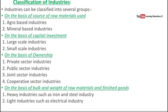The last classification is on the basis of bulk and weight of raw material and finished goods. First are heavy industries, such as iron and steel industries, which deal with very heavy materials. Next are light industries, which include electrical industries, textile industries, and finished goods industries.